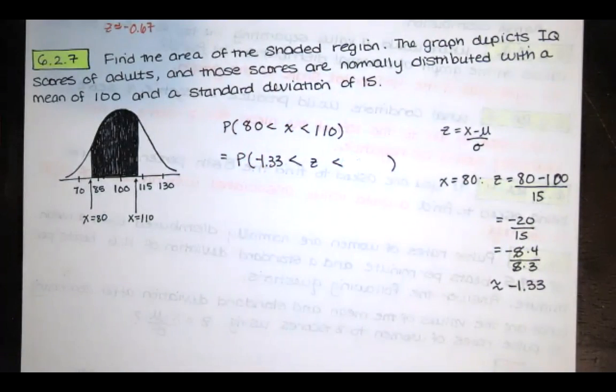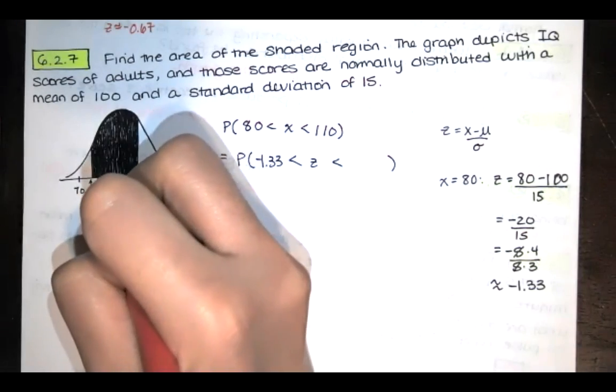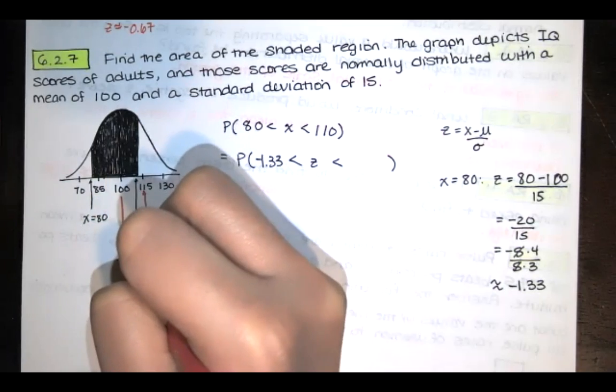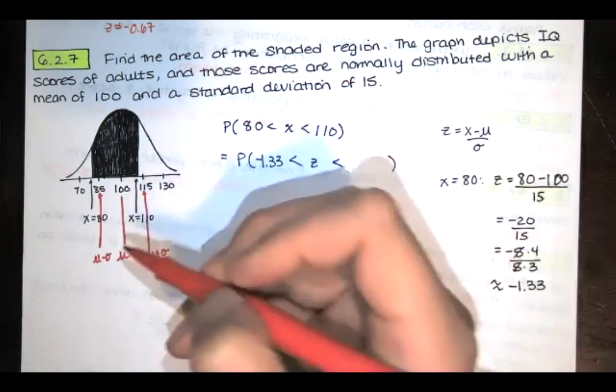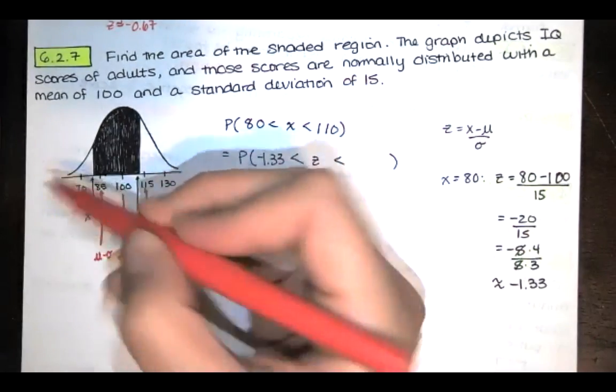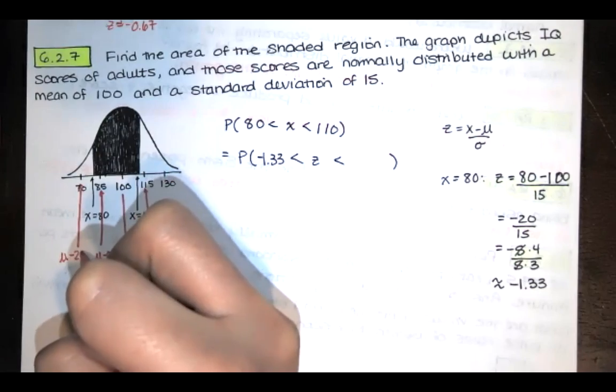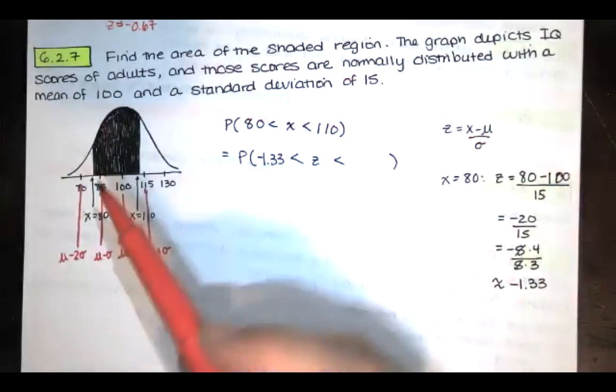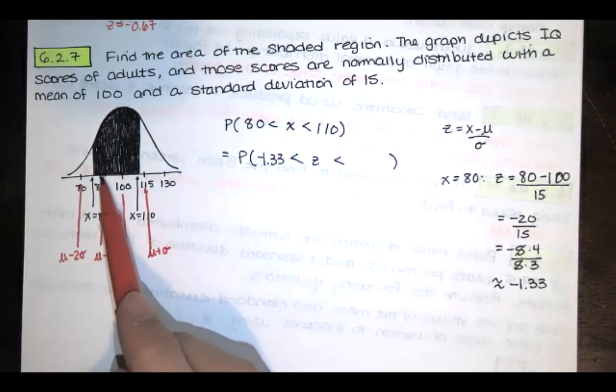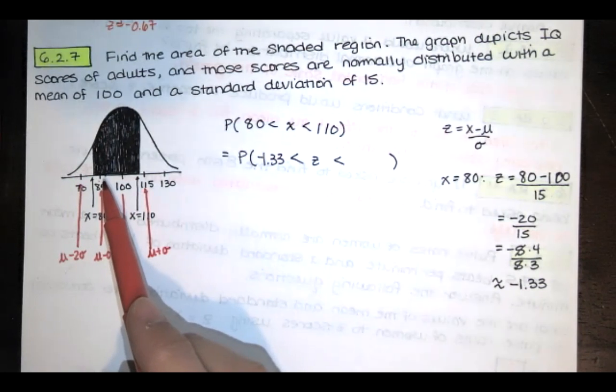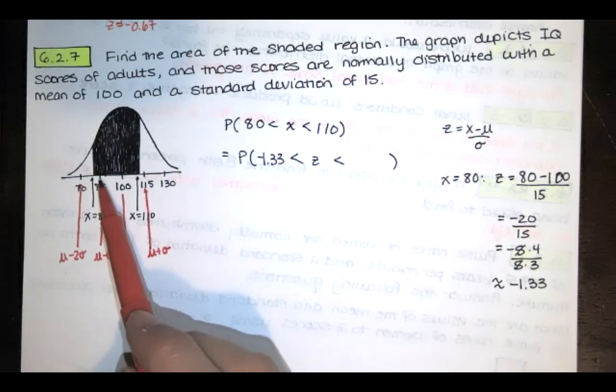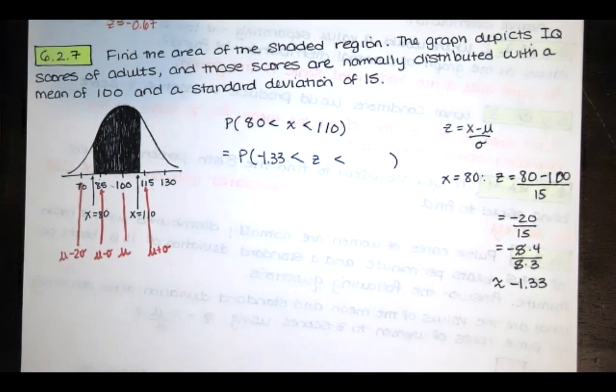And that's consistent with intuition because this is the mean. And then if I add one standard deviation to that, I get to 115. And if I subtract one standard deviation from that, I get to 85. If I subtract one standard deviation from that, I'm subtracting 15 again, I get 70. So this x equals 80 is between one standard deviation below the mean and two standard deviations below the mean. So z equals negative 1.33. That makes sense because it's right here in between that first and second standard deviation below the mean.